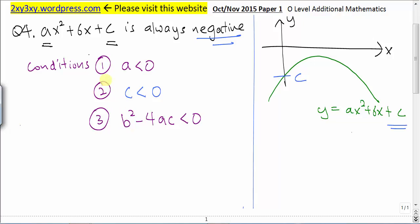Let's simplify this expression. b takes the value of 6, a takes the value of a, and c takes the value of c.